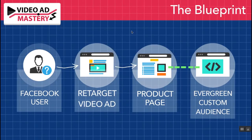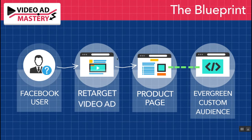The next step is to show our retargeting video ad. We have that custom audience built up and it's building up every day of those people that are viewing our video. Then we have that same person scrolling through Facebook and we show them our retargeting video ad. This should be a short, story-based ad all about your product — show off the product and basically we're aiming to get the click through to our product detail page.